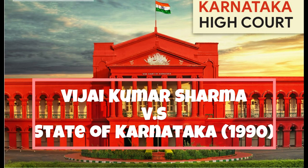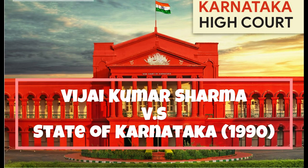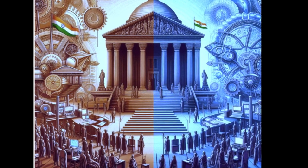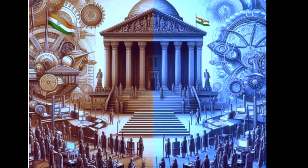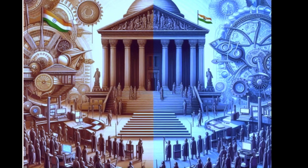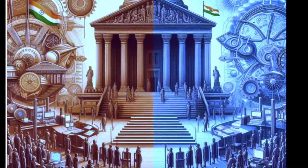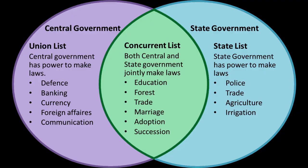In the case of Vijay Kumar Sharma v. State of Karnataka, the court held that if the doctrine of pith and substance can be used to resolve a conflict between two legislations under the Union and the State List, there is no reason why it cannot be used to resolve a conflict between different entries in the Concurrent List.